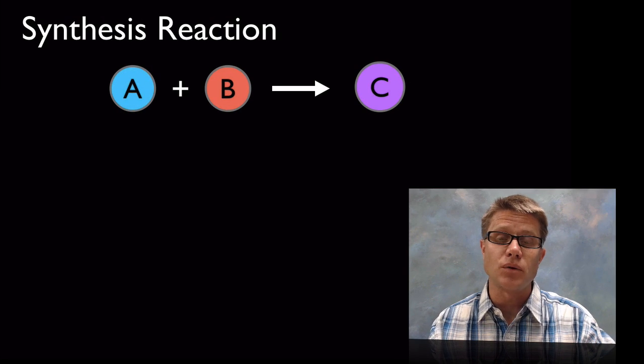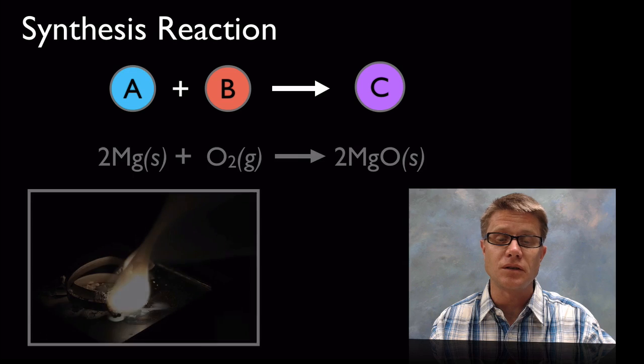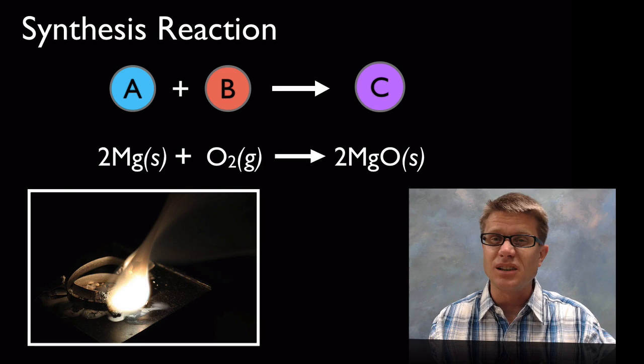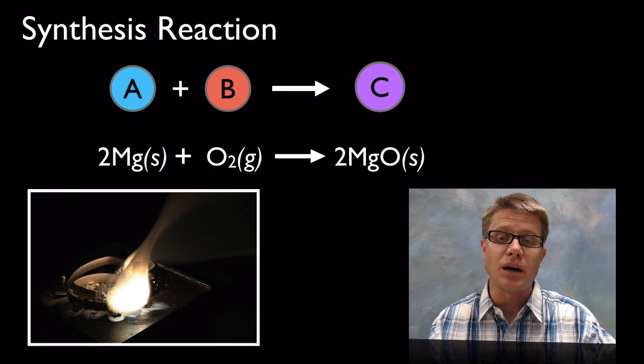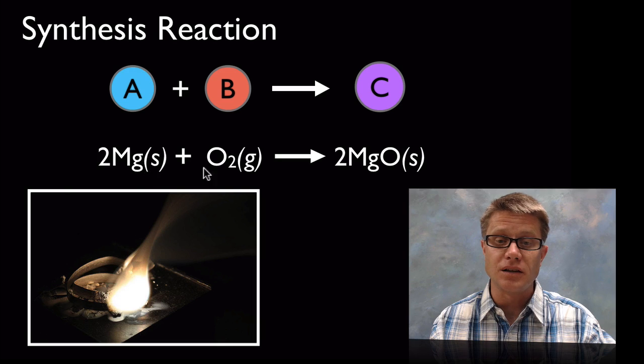Synthesis reactions are when we're taking atoms and molecules and combining them together. So let me give you a couple of examples. Let's say we take magnesium, get it a little bit hot and then allow it to combine with oxygen. It's going to make magnesium oxide. And so when it's done you're going to have a new solid that's created. We're taking a solid and a gas and we're making a new solid out of it.